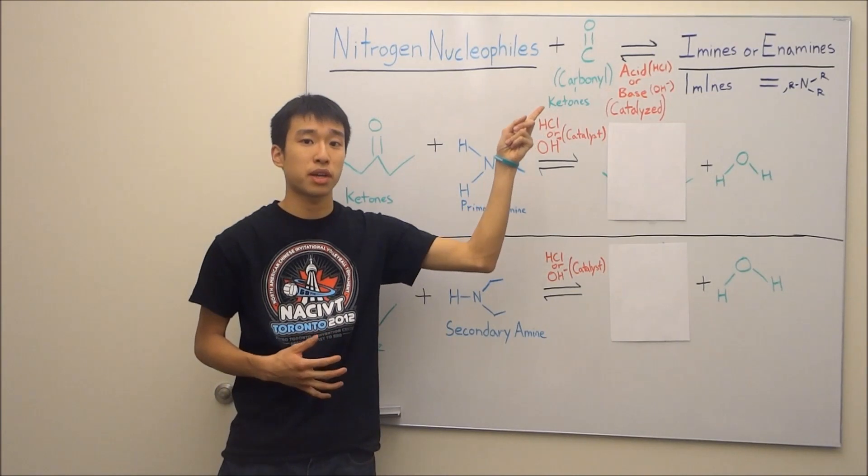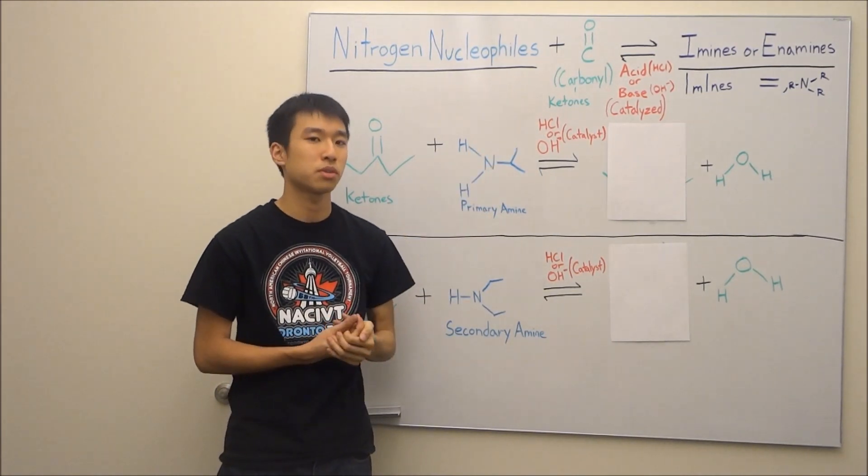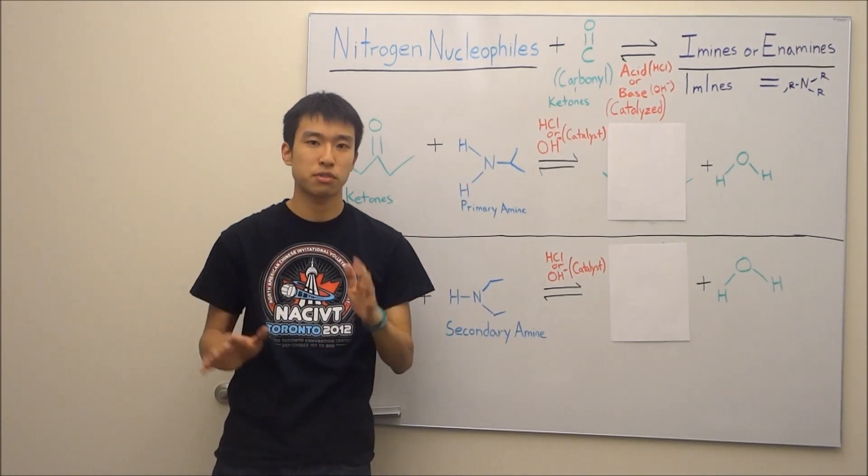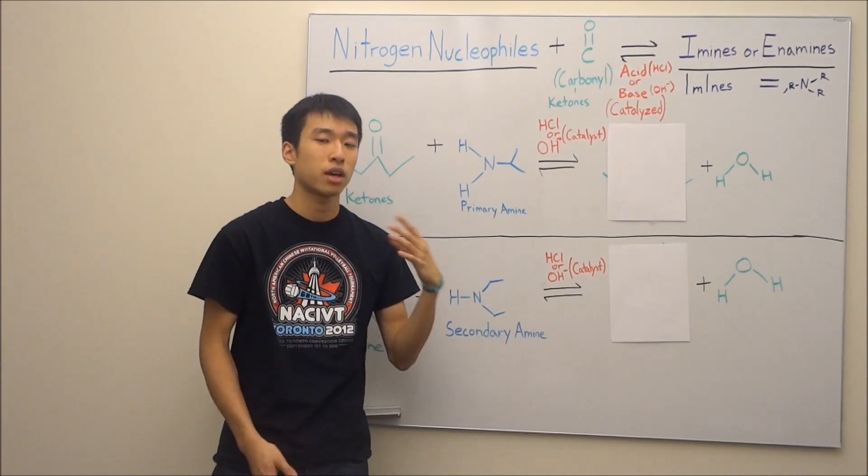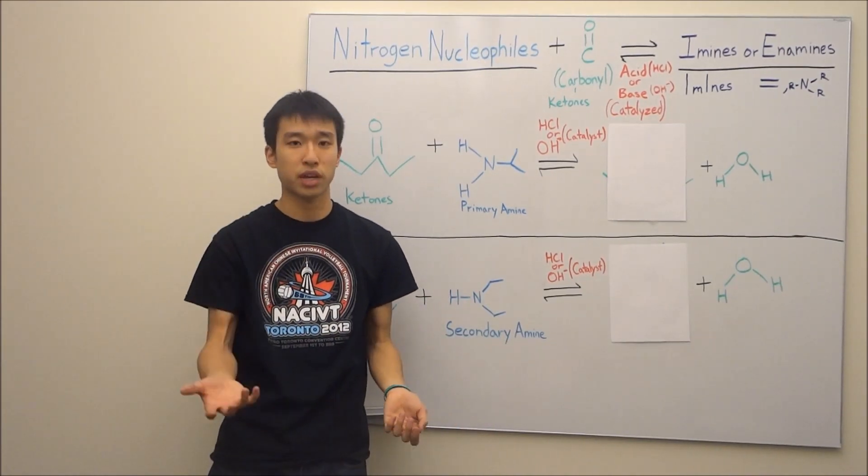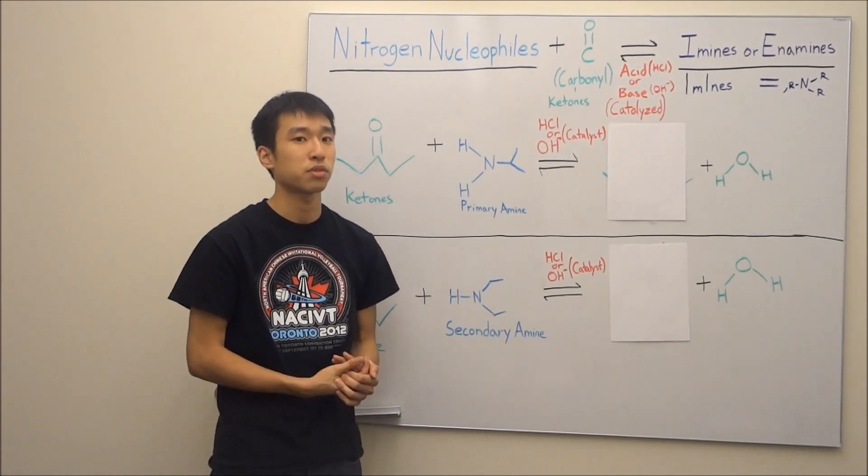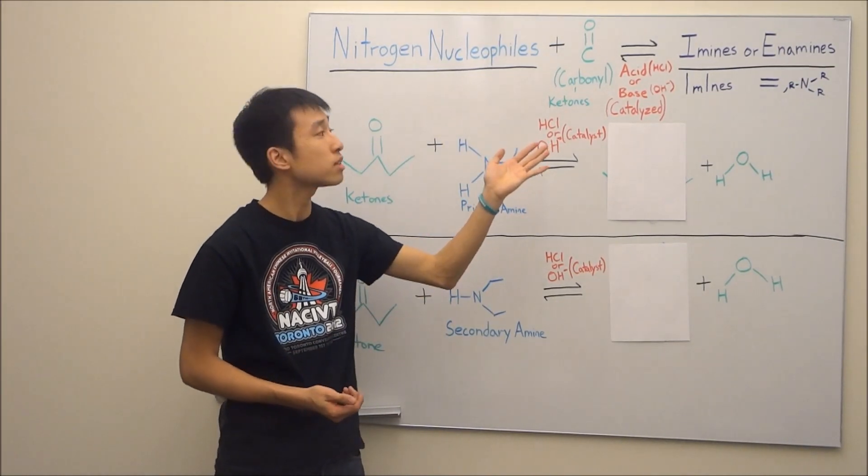And I have HCl and OH- here for my acid and base, but you don't have to use those. Different professors give different acids and bases. So it might be hydronium. It might be sulfuric acid. Check with your notes for those. But they give you your imine and enamines.